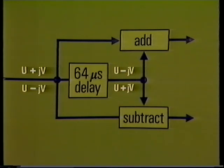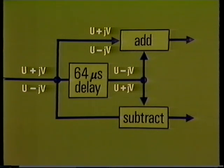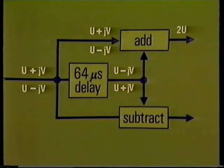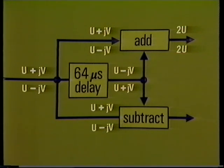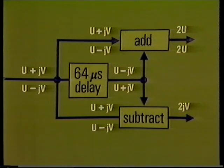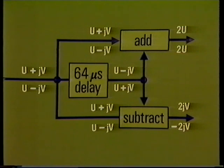Let's look at the addition first. There's a direct input U plus JV to the adder, and the delay circuit gives U minus JV. The sum of these two is simply 2U. The next line period, the direct input is U minus JV, but the delay circuit now produces U plus JV. The sum of these two is once again 2U. Now let's look at the subtraction circuit. If the direct input is U plus JV, the delayed output U minus JV is subtracted from this to give 2JV. If the direct input is U minus JV, subtracting the delayed output, which is now U plus JV, gives minus 2JV. So the subtractor output changes from one line to the next, whereas the adder output doesn't.